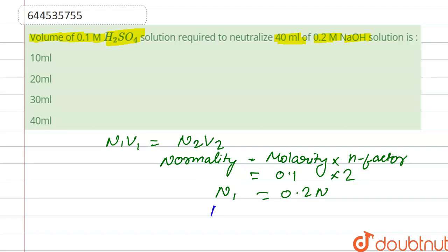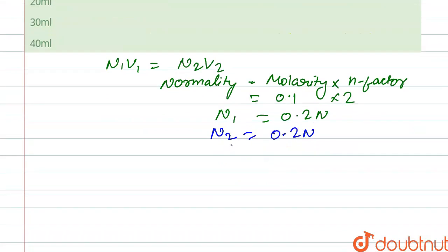And here N₂ is 0.2 N because the n-factor of NaOH is 1 because one OH is liberated from NaOH. So we put here 0.2 into 1 that is 0.2 N and V₂ is given, that is 40 ml.